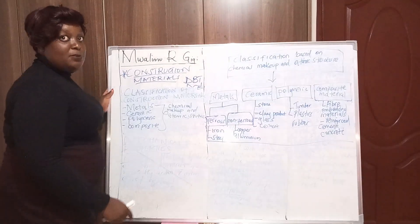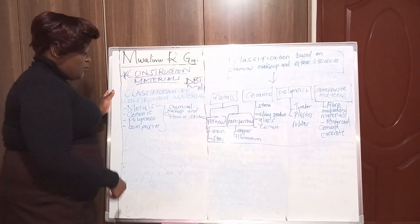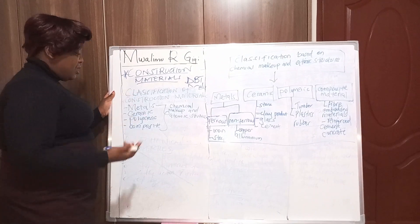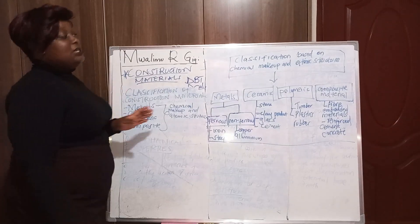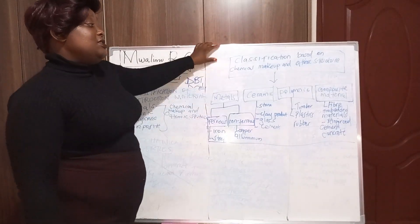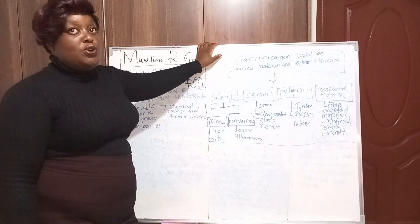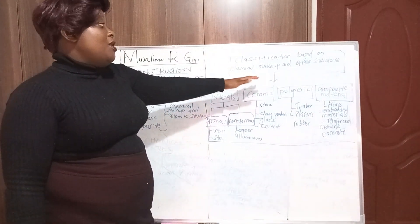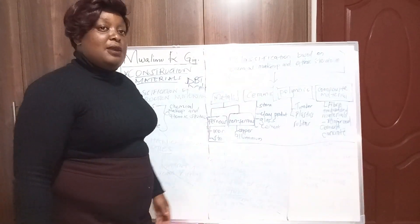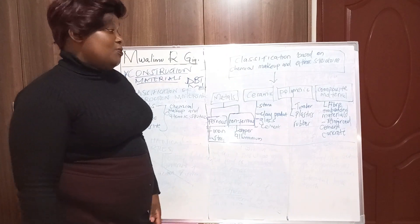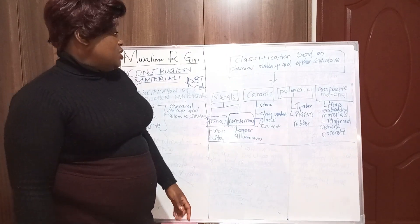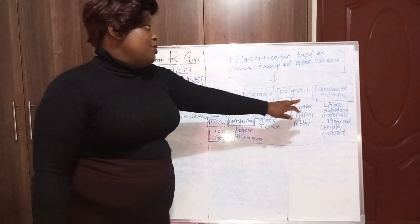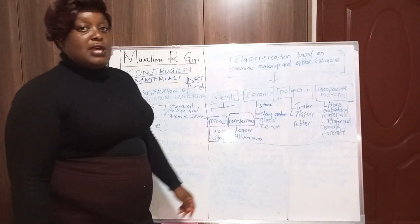We have a chart to show the classification of construction materials based on chemical makeup and atomic structure. The four categories are metals, ceramic, polymeric, and composite materials.